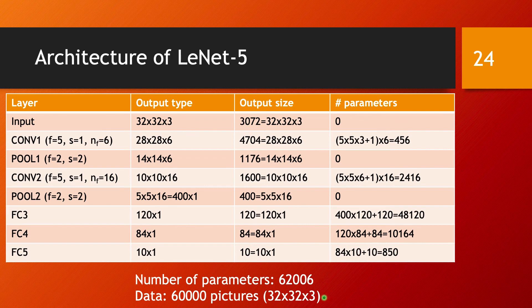Summing all of these, the total number of parameters to be estimated in this LeNet-5 architecture is approximately 62,006. The network was trained on the MNIST dataset, which consists of exactly 60,000 pictures, each of size 32 by 32 by 3 channels.